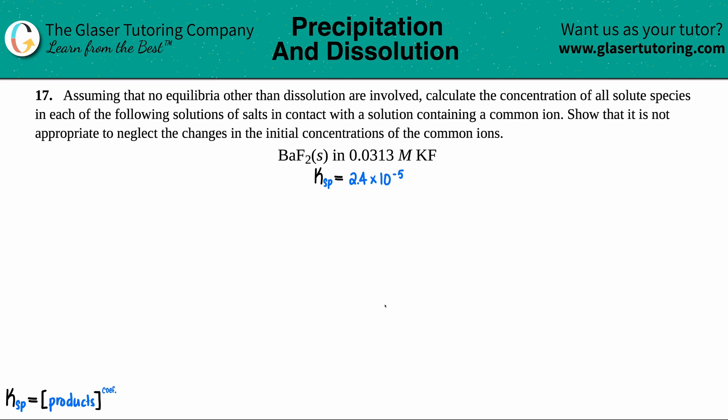Number 17. Assuming that no equilibria other than dissolution are involved, calculate the concentration of all solute species in each of the following solutions of salts in contact with the solution containing a common ion. Show that it is not appropriate to neglect the changes in the initial concentration of the common ions.